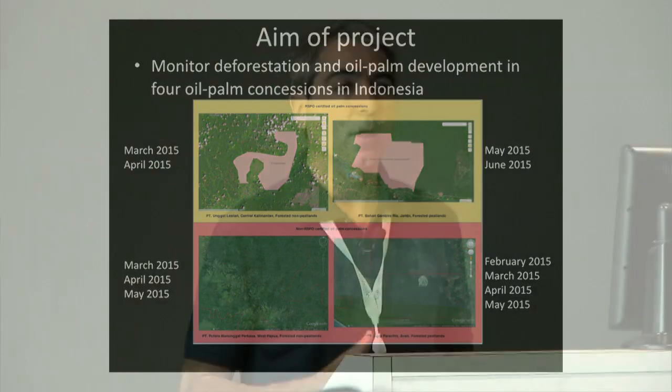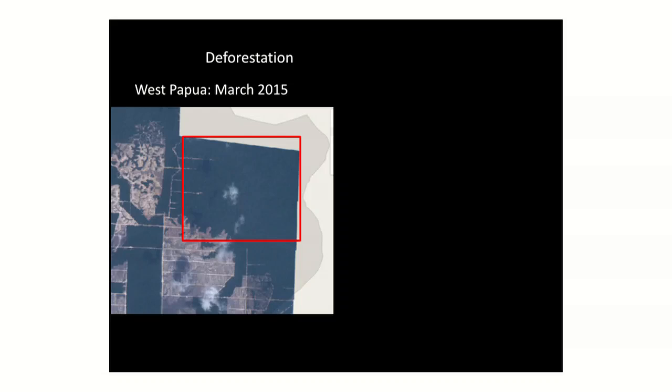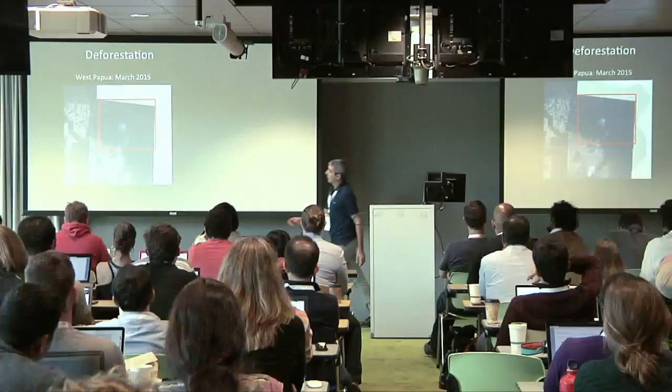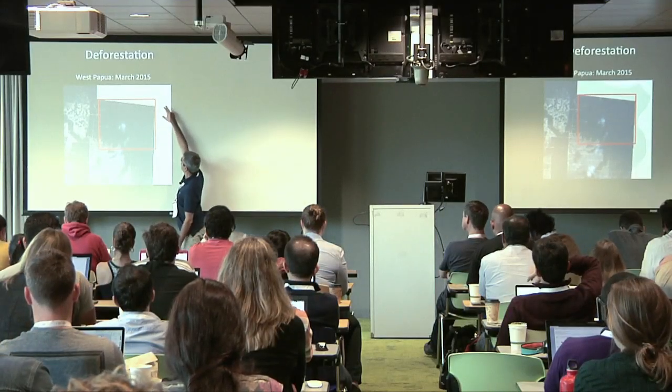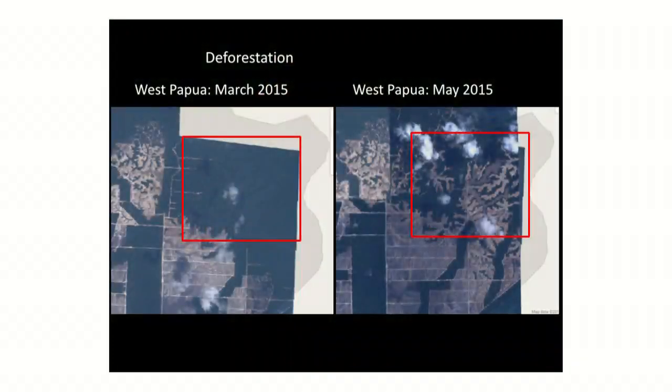One of the aims was to try to monitor deforestation with the Skybox images. This is an example of a West Papua plantation in March of this year, where you can see the concession boundary. This is a non-RSPO concession, so they can deforest as long as they don't break any other rules. If you then look at the same area in May, you can see that this whole area has been deforested — about four square kilometers in only two months.